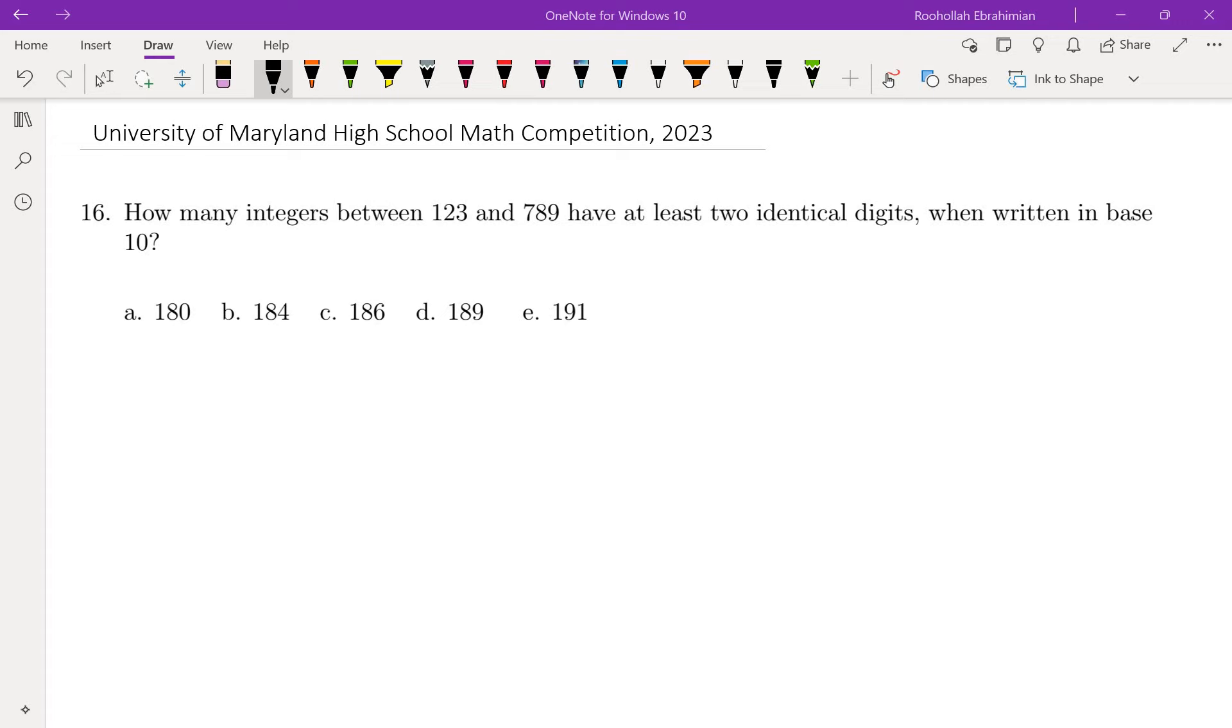Okay, so 123 and 789 seem a little bit weird. So what I'm going to do is I'm going to look at all the numbers from 100 to 799 that have two identical digits.